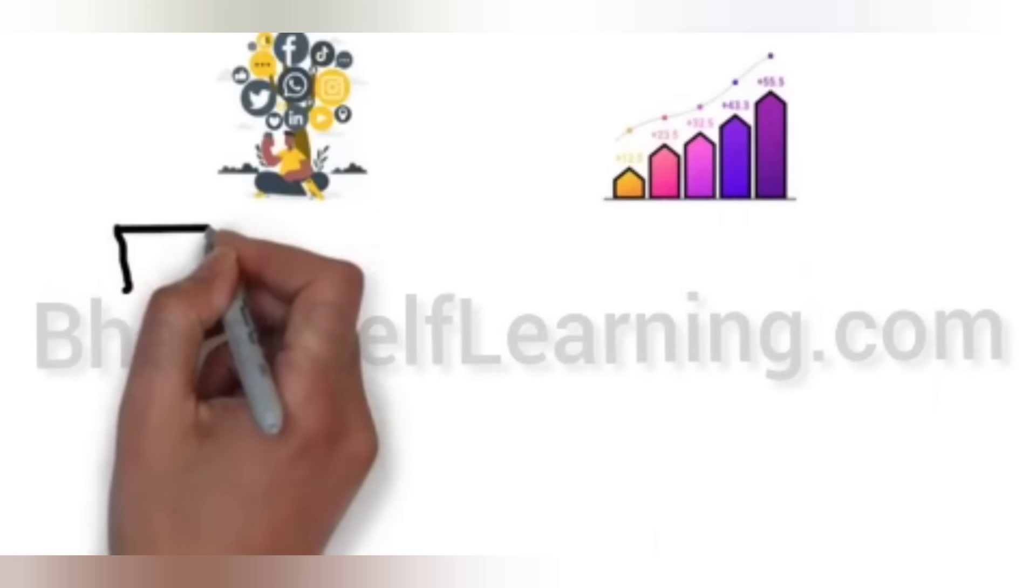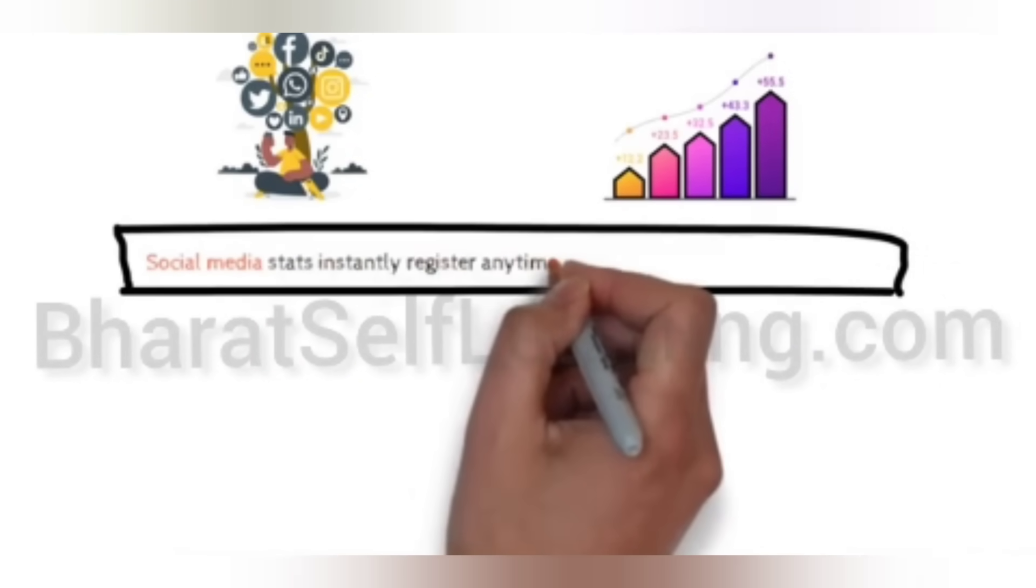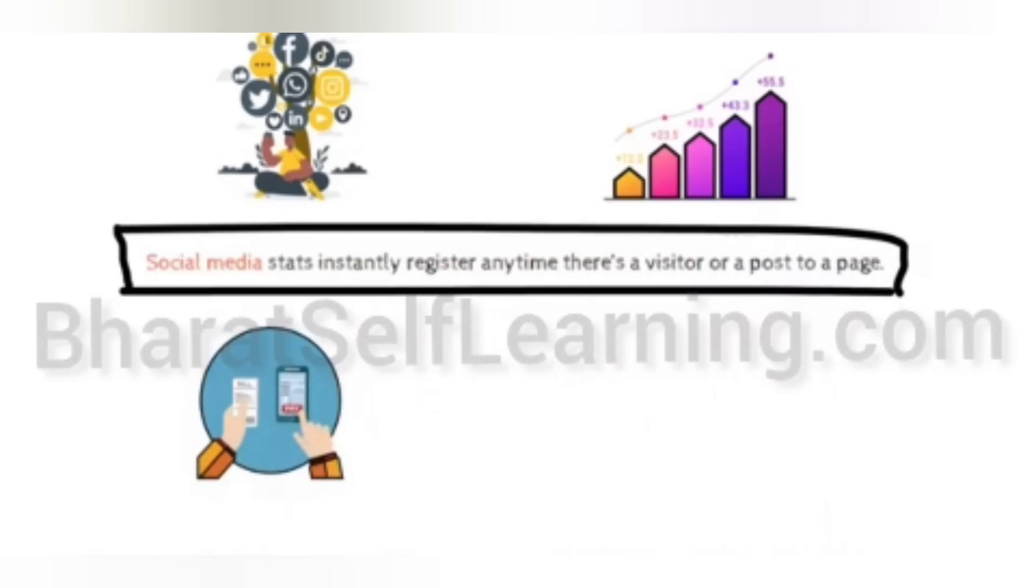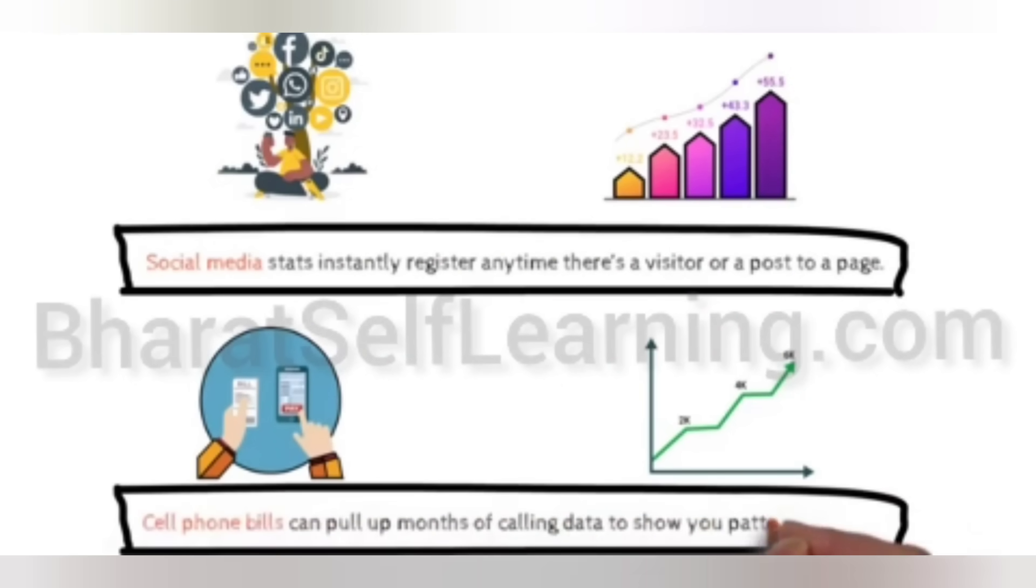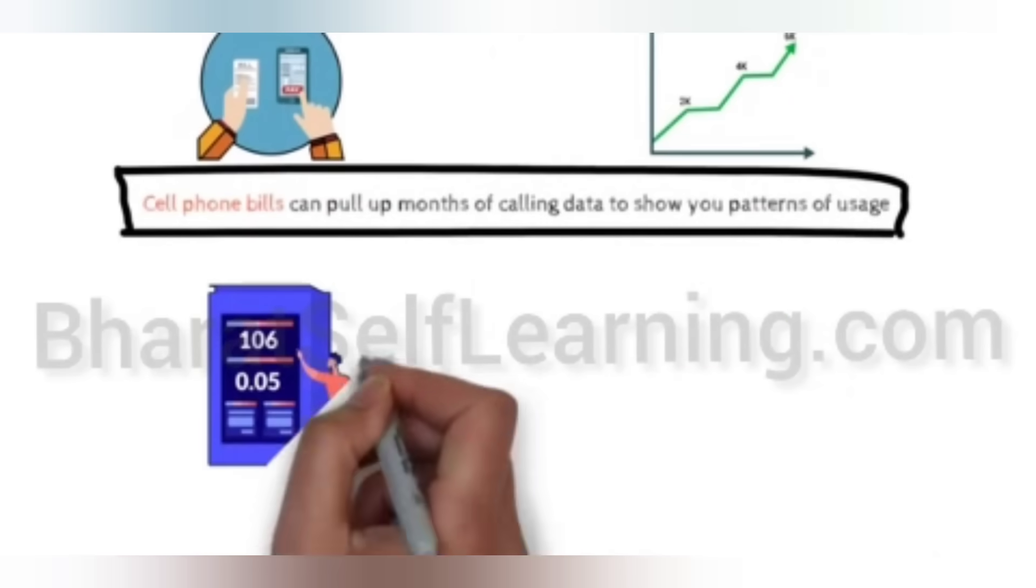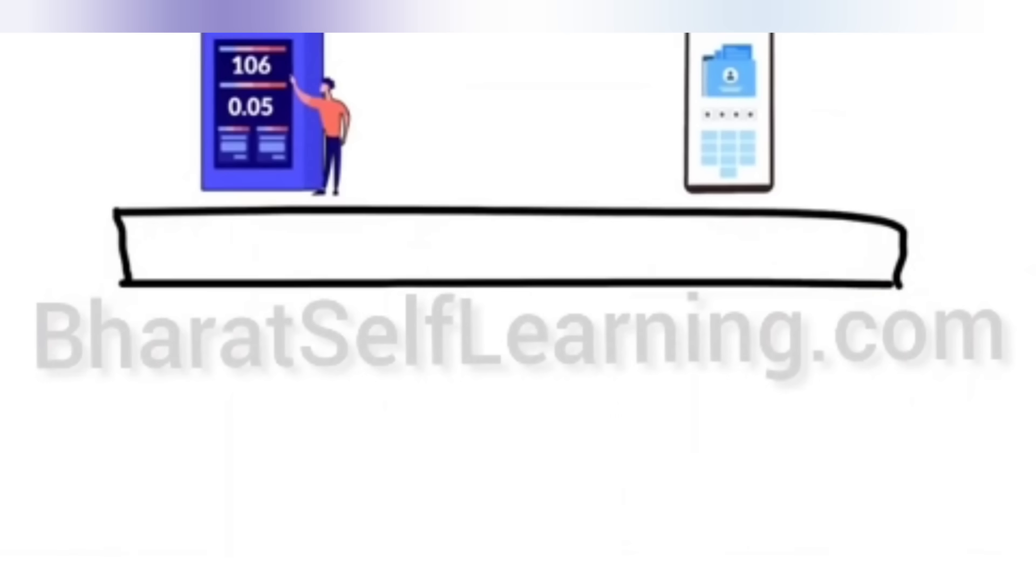Social media stats instantly register anytime there's a visitor or a post to a page. Cell phone bills can pull up months of calling data to show you patterns of usage. Sensors monitor the changing weather and report the data to you instantly on your smartphone.